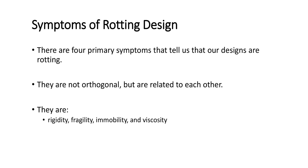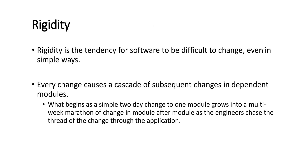Starting with the first symptom, which is known as rigidity. Rigidity is the tendency of a software to be difficult to change even in the simplest ways. If my design is such that I cannot change easily in a module or system, then we say that the software is more rigid. Every change causes a cascade of subsequent changes in the dependent modules.